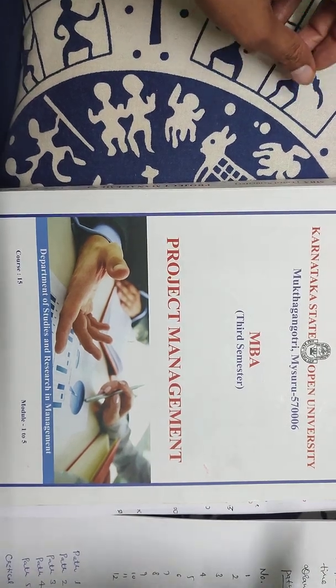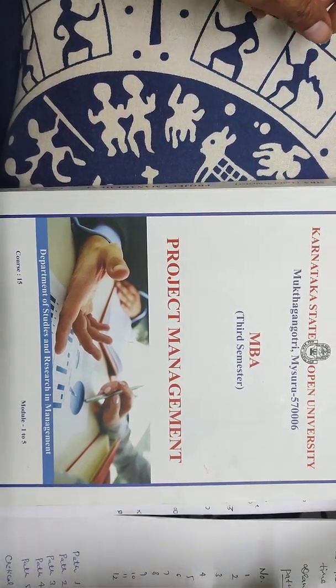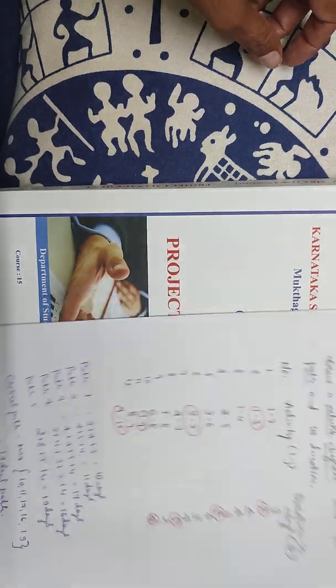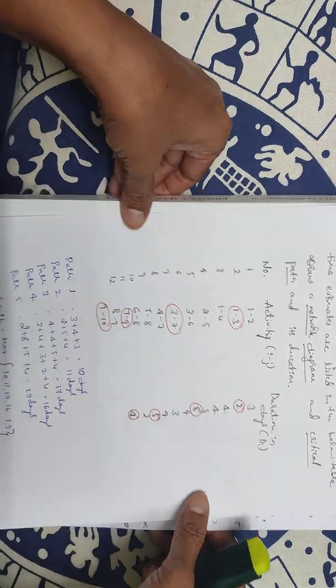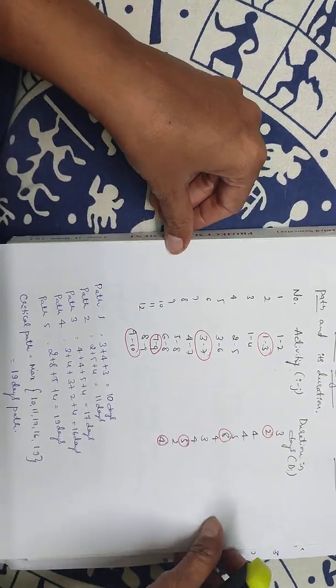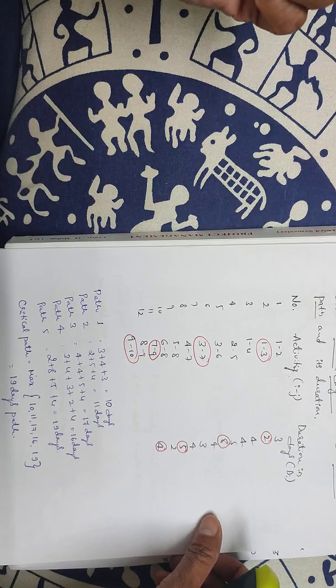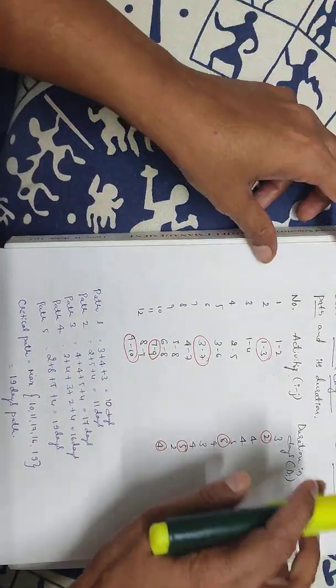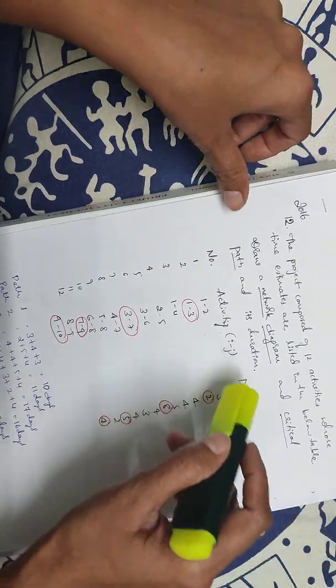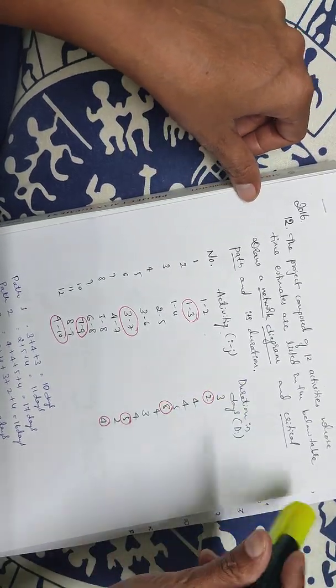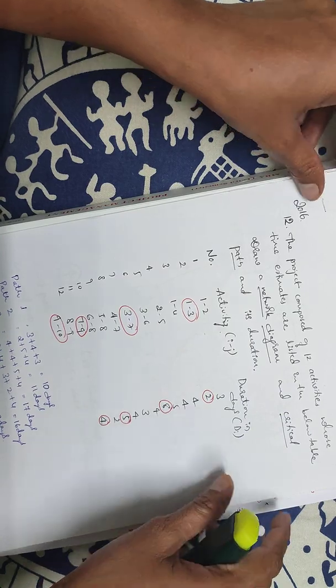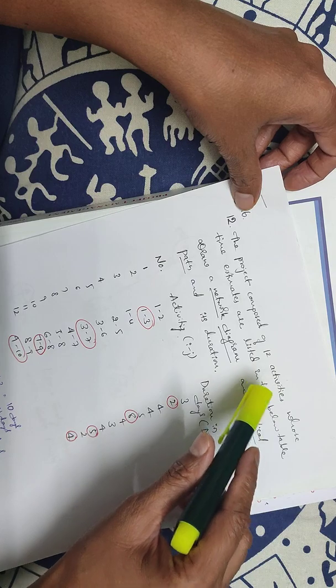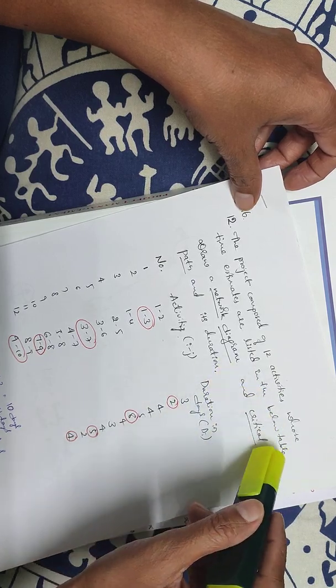Hello friends, project management for MBA third semester, course number 1.1.5. This is the last problem we'll solve. One of our friends asked about this one also. This is the first basic simple one, then we'll do a slightly more complicated one. The activity network diagram and critical path, we need to find out its duration.